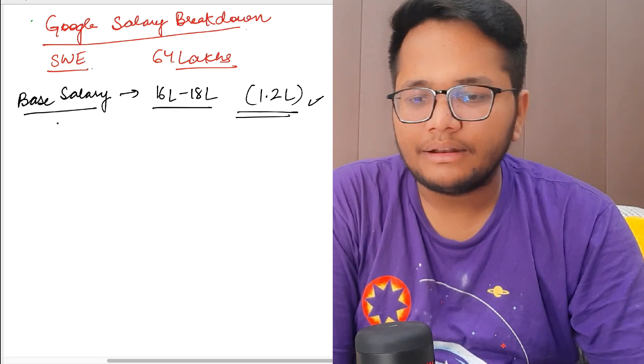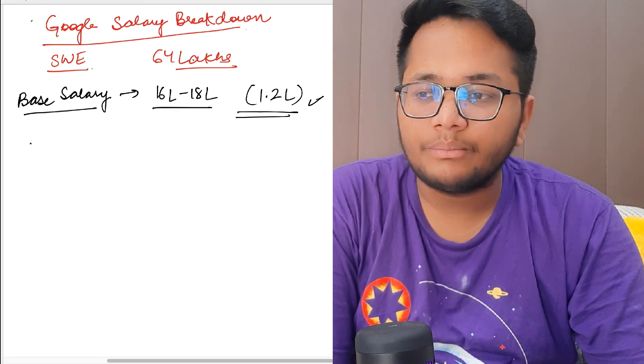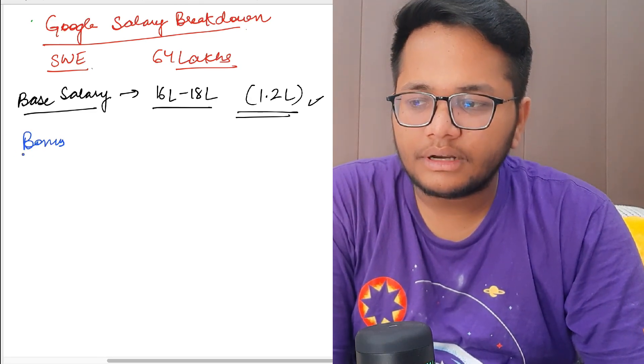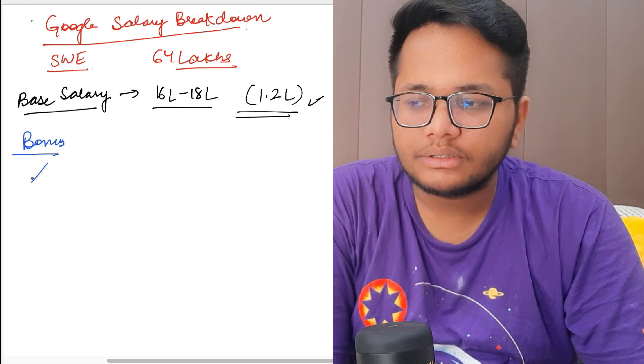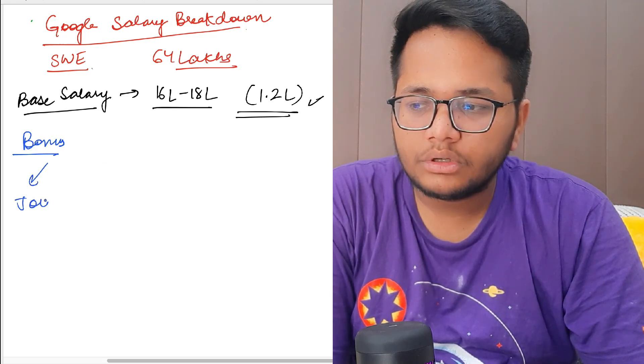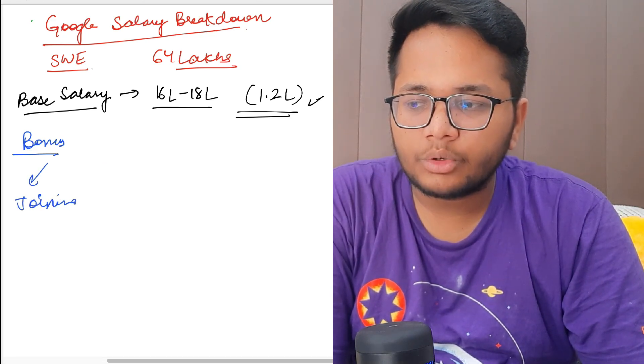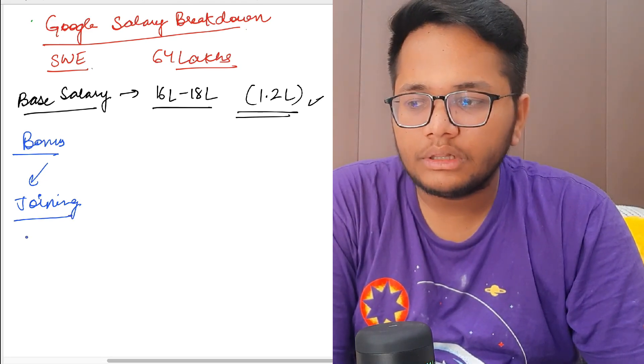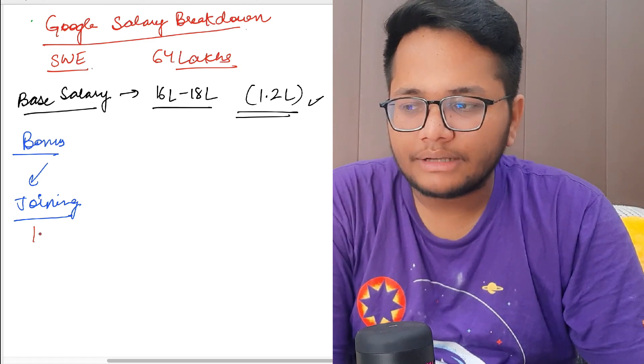After that they have certain other components and the bonuses in Google are considered to be worthy. There are different types of bonuses. First type is joining bonus. Joining bonus is the bonus that you get once you join any particular company. The joining bonus that Google offers is 1.5 lakhs.